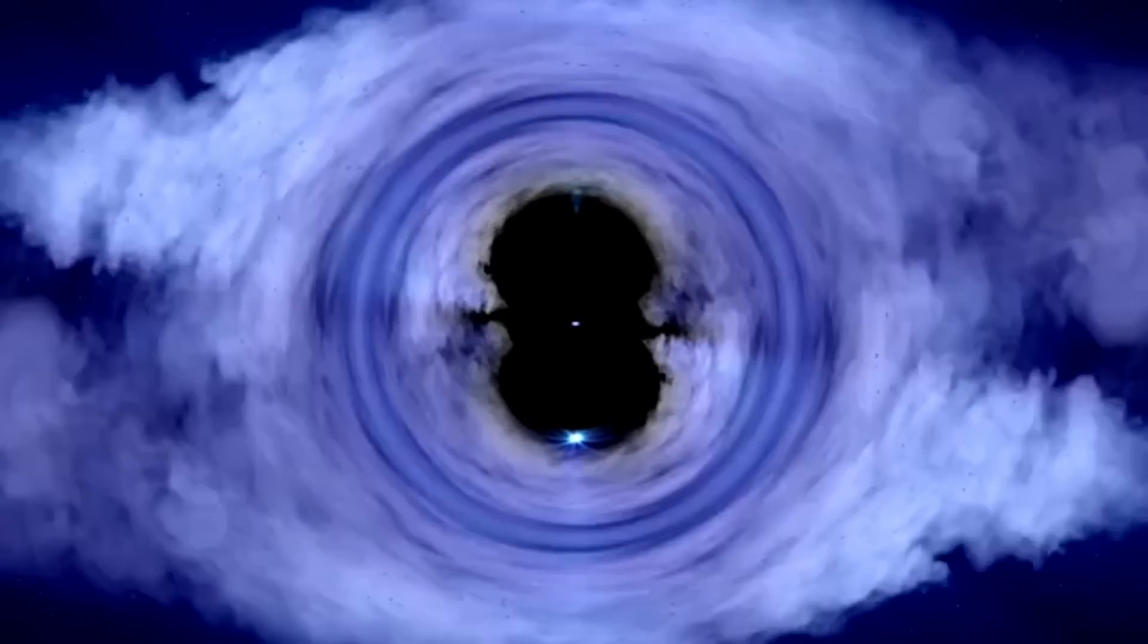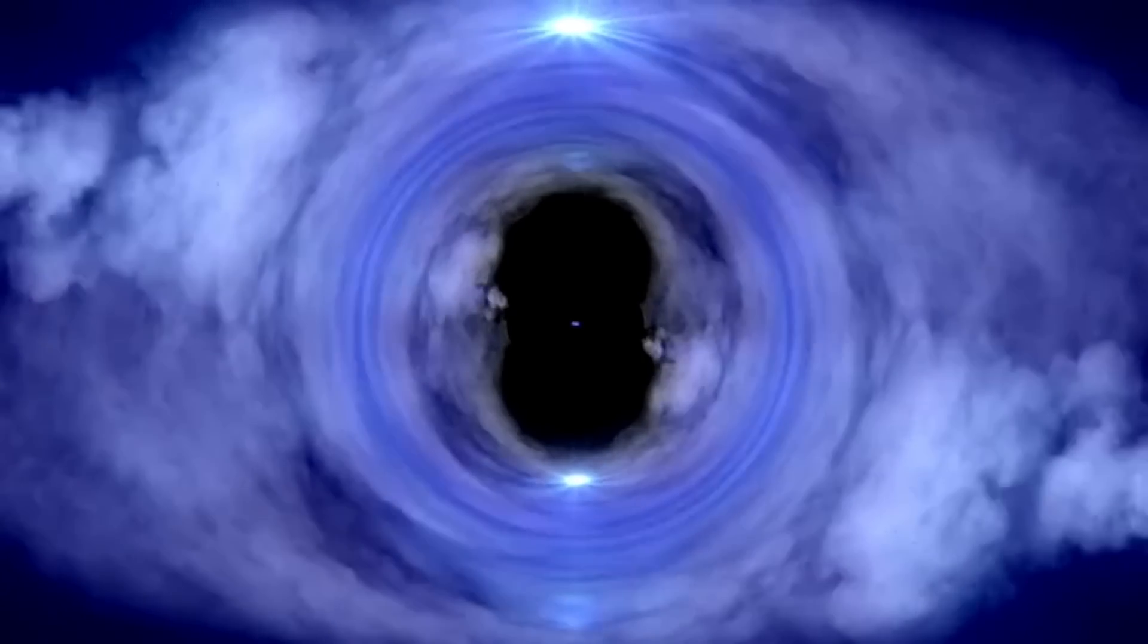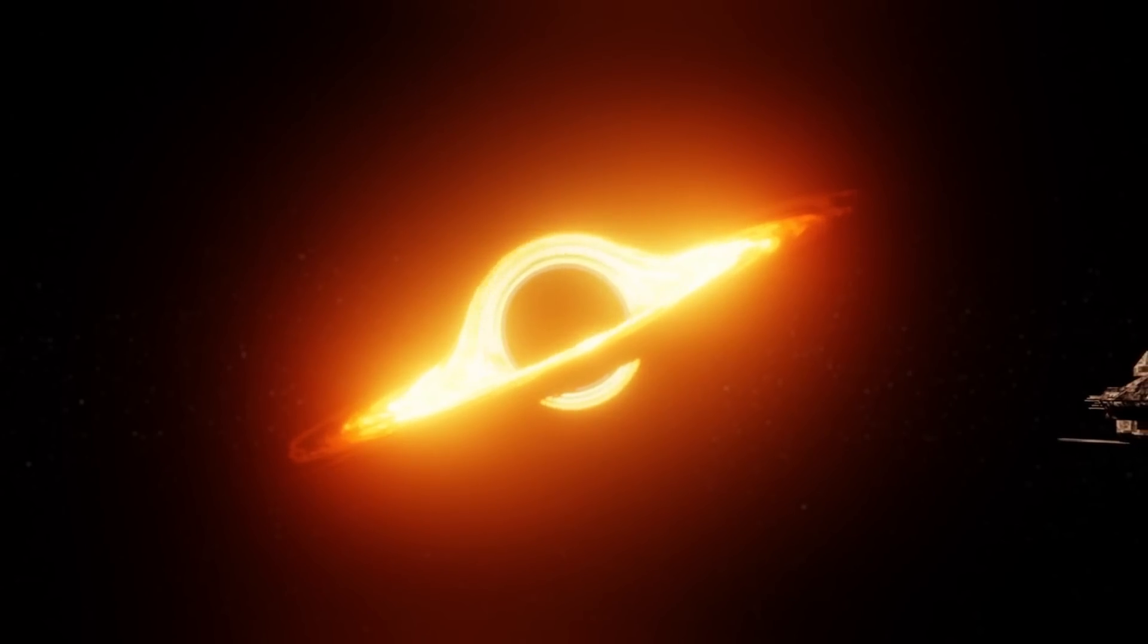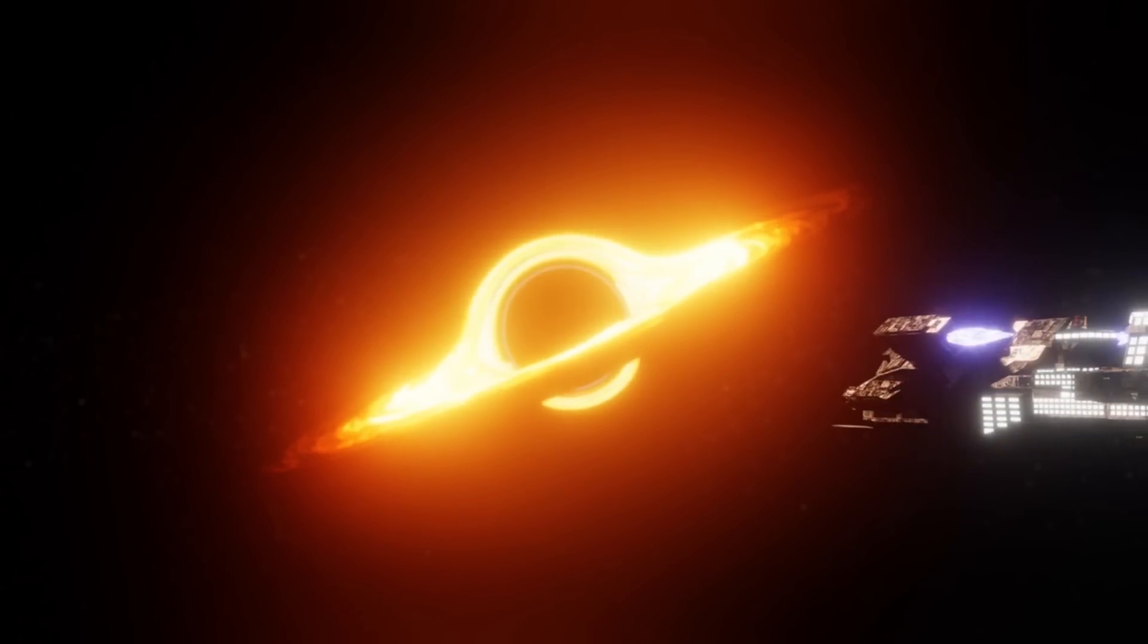Essentially, when a massive star dies, it leaves behind a tiny, dense core. If this core's mass is more than three times that of the sun, gravity overwhelms everything else, leading to the formation of a black hole.